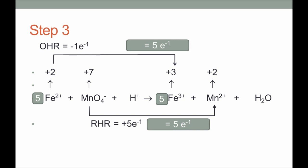Since the number of manganese ions on the left and right are the same, the coefficient remains one. Next, we balance oxygen: on the left side there are four oxygen atoms in manganate ion, so we add four moles of water on the product side. That leaves hydrogen to balance — since we have eight hydrogen atoms on the right, we add eight H⁺ ions on the reactant side. Now we have a balanced equation.